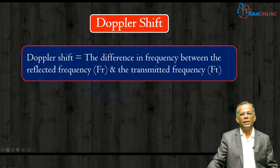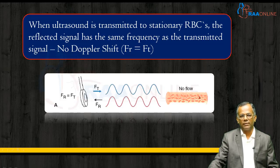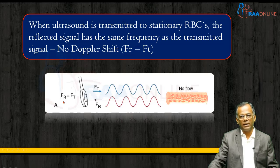In simple terms, what is a Doppler shift? It is the difference in frequency between the reflected frequency and the transmitted frequency. When ultrasound is transmitted to stationary RBCs — let's say there is no flow — you transmit ultrasound from the transducer and it reaches an area of no flow. The reflected frequency will have the same frequency as the transmitted one, so reflected frequency equals transmitted frequency. When this occurs, there is no Doppler shift.